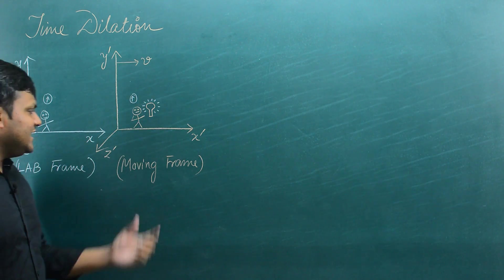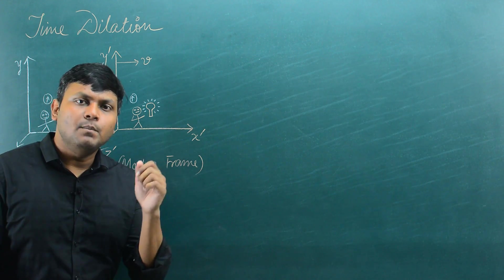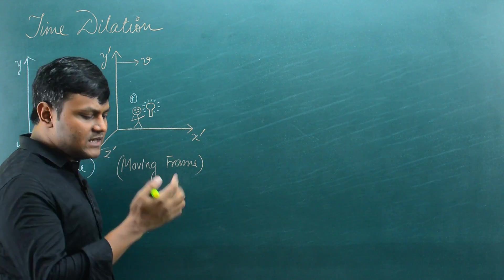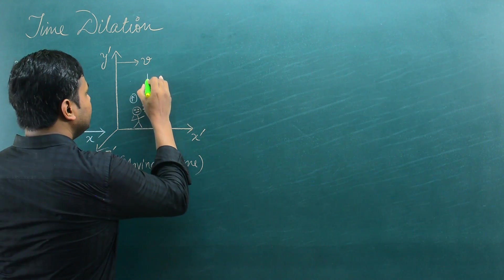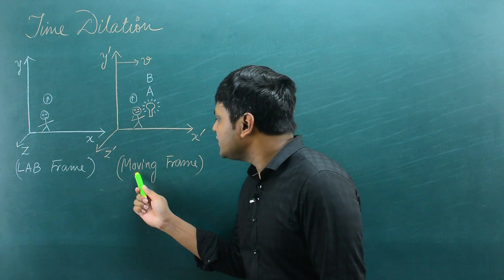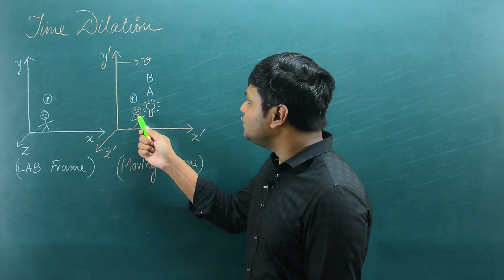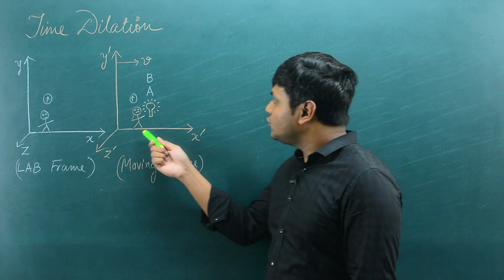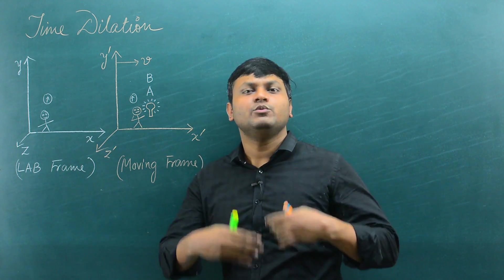Let me define two physical events. In the moving frame, the observer has a bulb that lights up once, and after some time lights up again. The first time the bulb lights up I call physical event A, and the second time physical event B. These two events happen at different points in time but at exactly the same location with respect to the observer in the moving frame. The physical events happen at rest with respect to the moving frame observer, though they are in motion with respect to the lab frame observer.